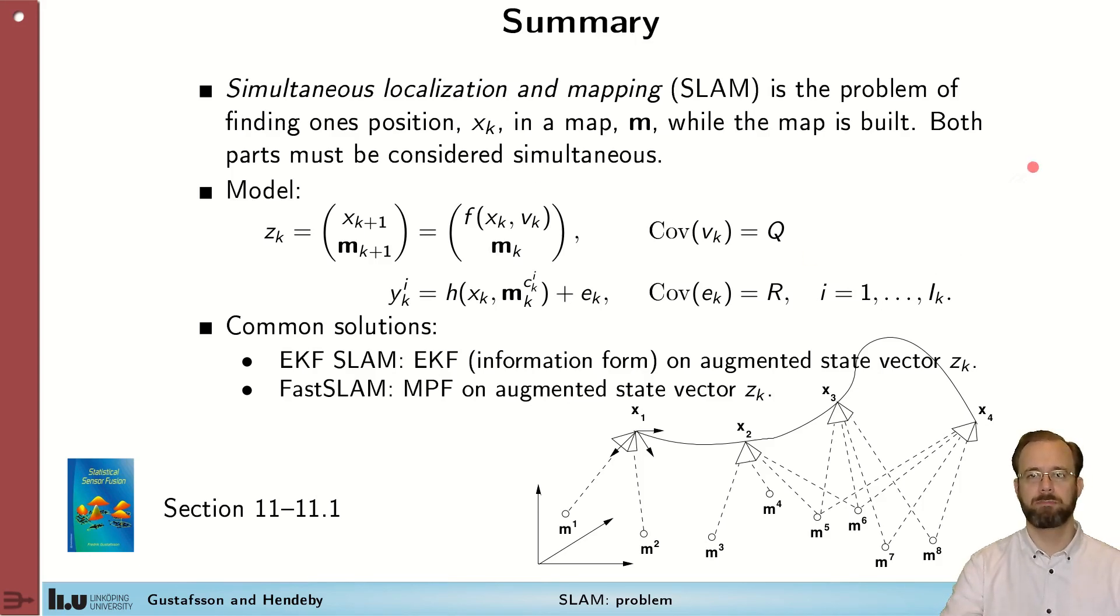We formulated it in terms of a model where we have states for the pose of the sensor that's evolving according to a dynamic model, a non-linear one for example, just as we have studied in many cases already, and a map that is static, not changing over time. And we have observations of these landmarks that make up the map, where it's important to associate the appropriate landmark in the map to the measurements that we actually have received.